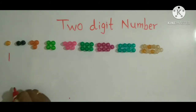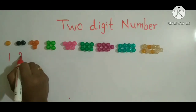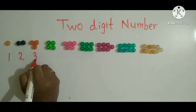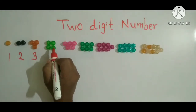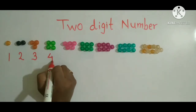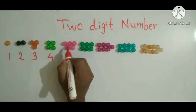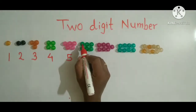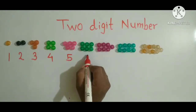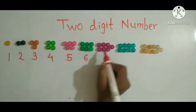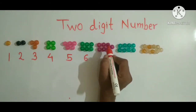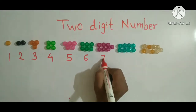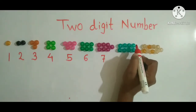We'll write one here. These are two beads. One, two. Three beads — one, two, three. Four beads — one, two, three, four. Five beads — one, two, three, four, five. Six beads — one, two, three, four, five, six. Seven beads — one, two, three, four, five, six, seven.